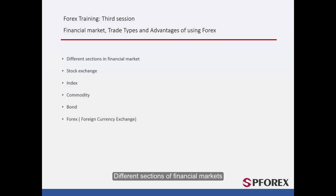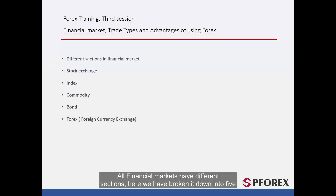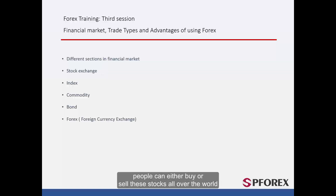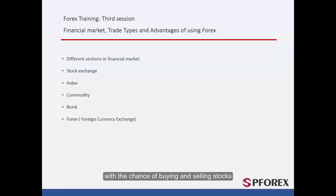Different Sections of Financial Markets. All financial markets have different sections. Here we have broken it down into five. The first section is called a stock. With the help of financial institutions and other companies, people can either buy or sell these stocks all over the world. For example, in England, the London Stock Exchange has provided people with the chance of buying and selling stocks.